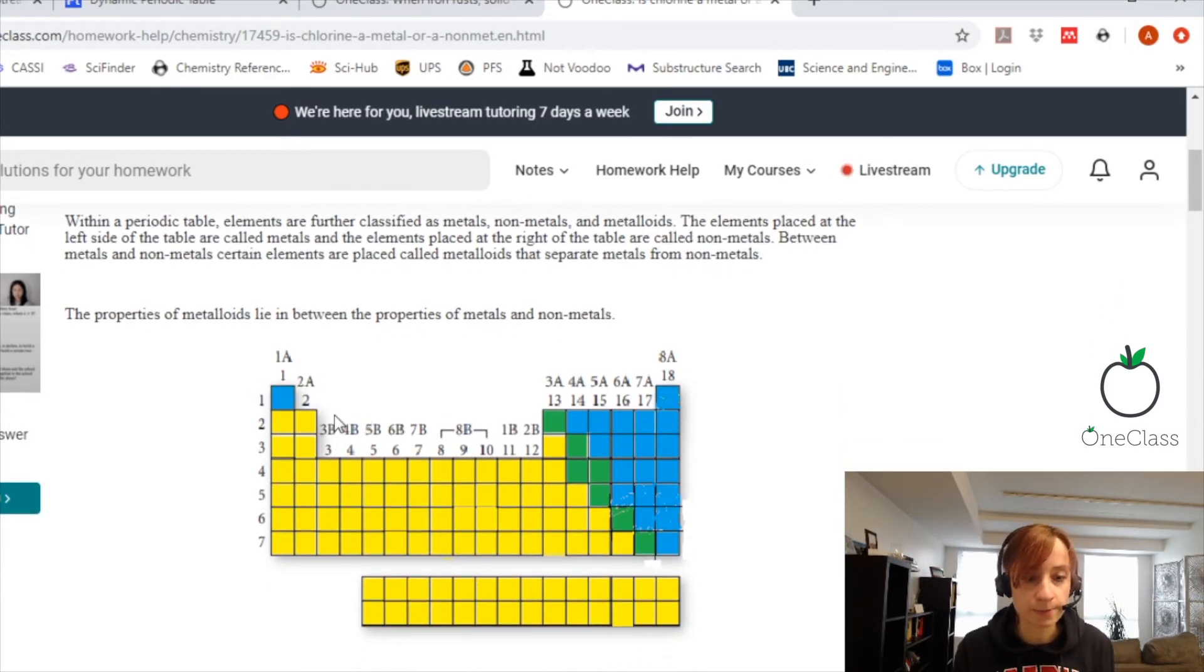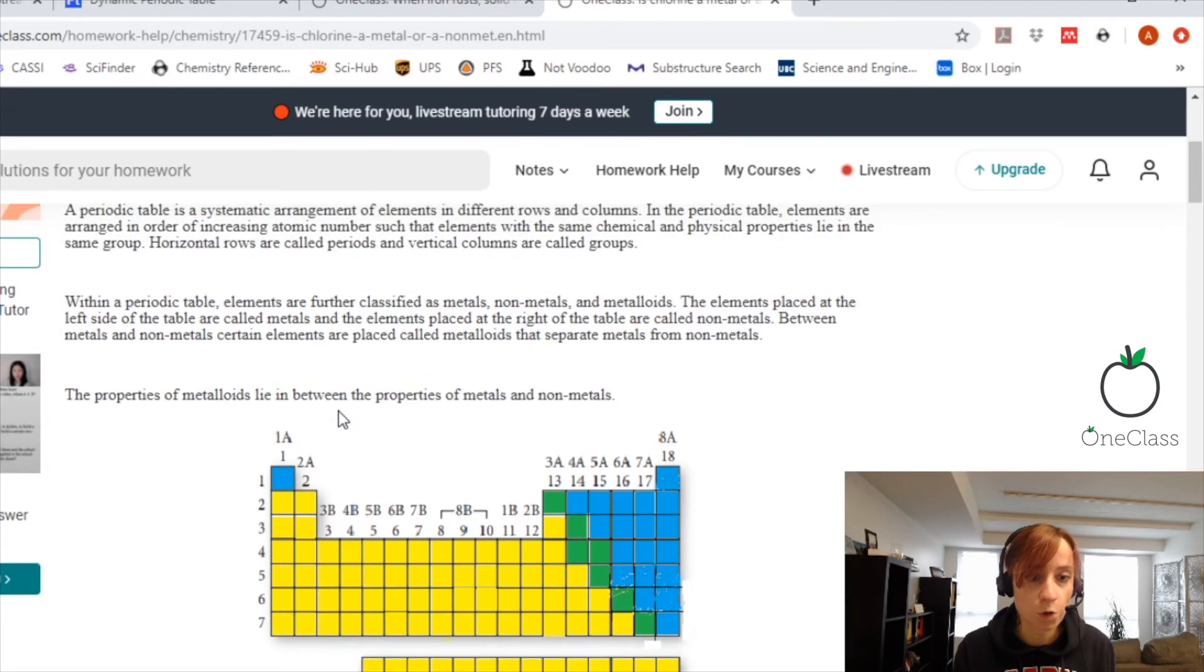So now in the periodic table, the horizontal rows, so going from left to right, are called periods, and the vertical columns, so up and down, are called groups.